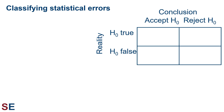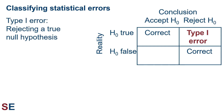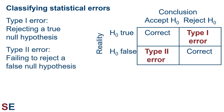If the null hypothesis is true and we accept it — fail to reject it — this is correct. If the null hypothesis is false and we reject it, this is also correct. However, if the null hypothesis is true and we reject it, then we've made an error which we call a type 1 error. If the null hypothesis is false and we fail to reject it — accept it — then we've made an error which we call a type 2 error.